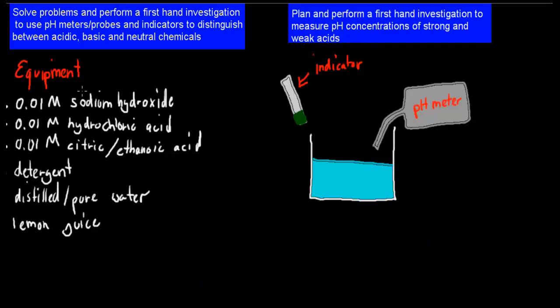The equipment you might have in your class would be relatively simple. You might have 0.01 molar of sodium hydroxide, 0.01 molar of hydrochloric acid, and 0.01 molar of citric acid or ethanoic acid. The same concentrations of your actual substances, of your bases or your acids. Sodium hydroxide would be a base, a strong base.